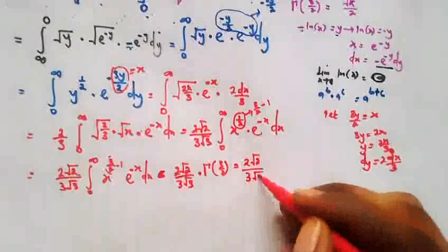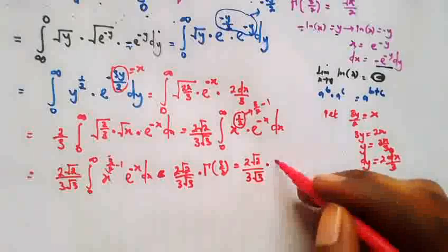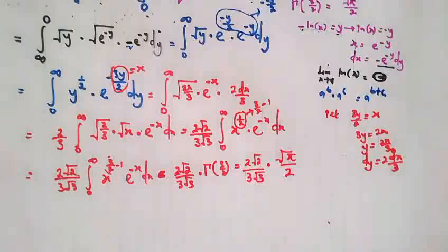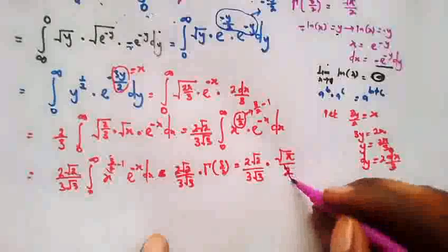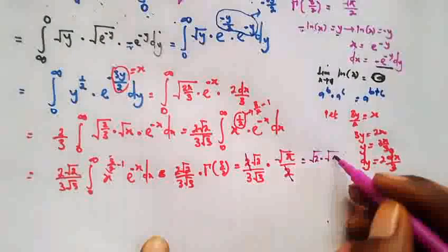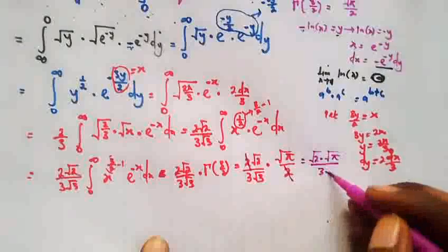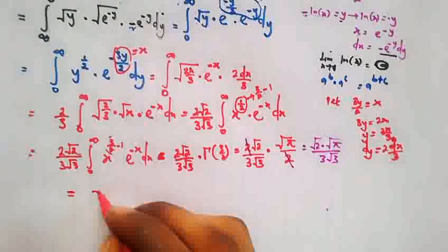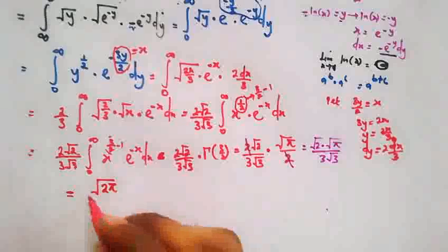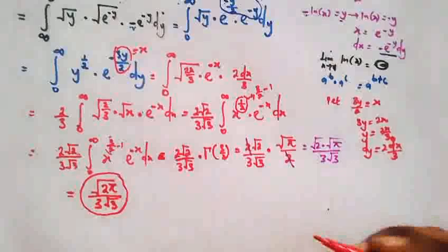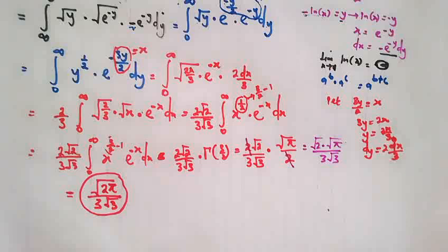We now perform cancellation: the two in the numerator and the 2 in the denominator cancel. This leaves us with the square root of 2 times the square root of pi, all over 3 square root of 3. Combining the square roots, the final answer is the square root of 2π all over 3 square root of 3. Thank you for viewing and please subscribe to my YouTube channel for more interesting videos.